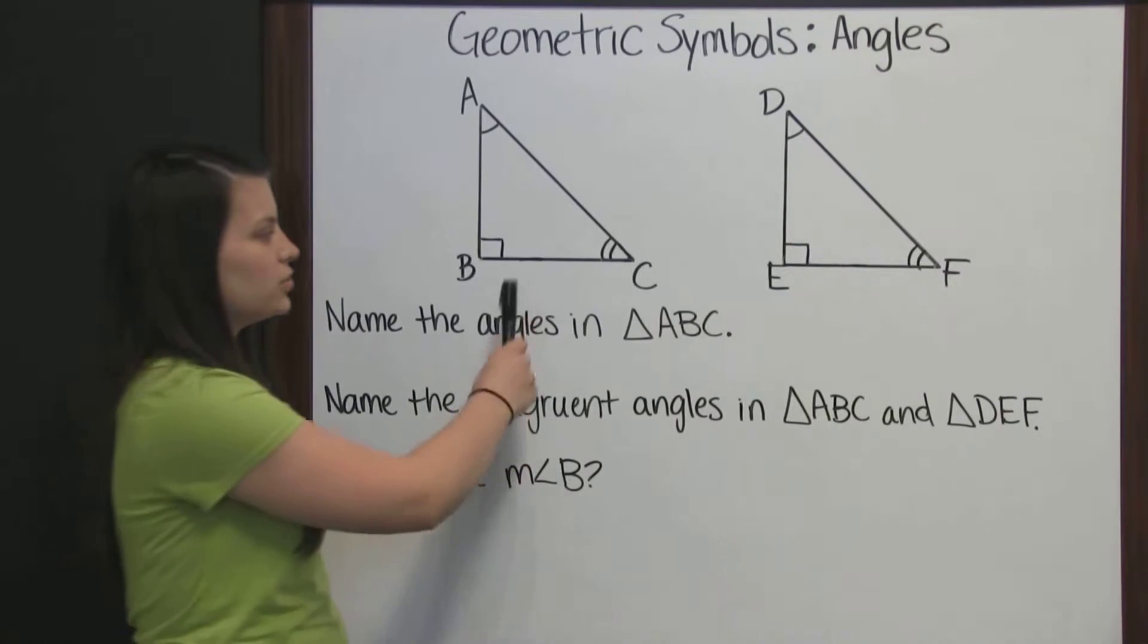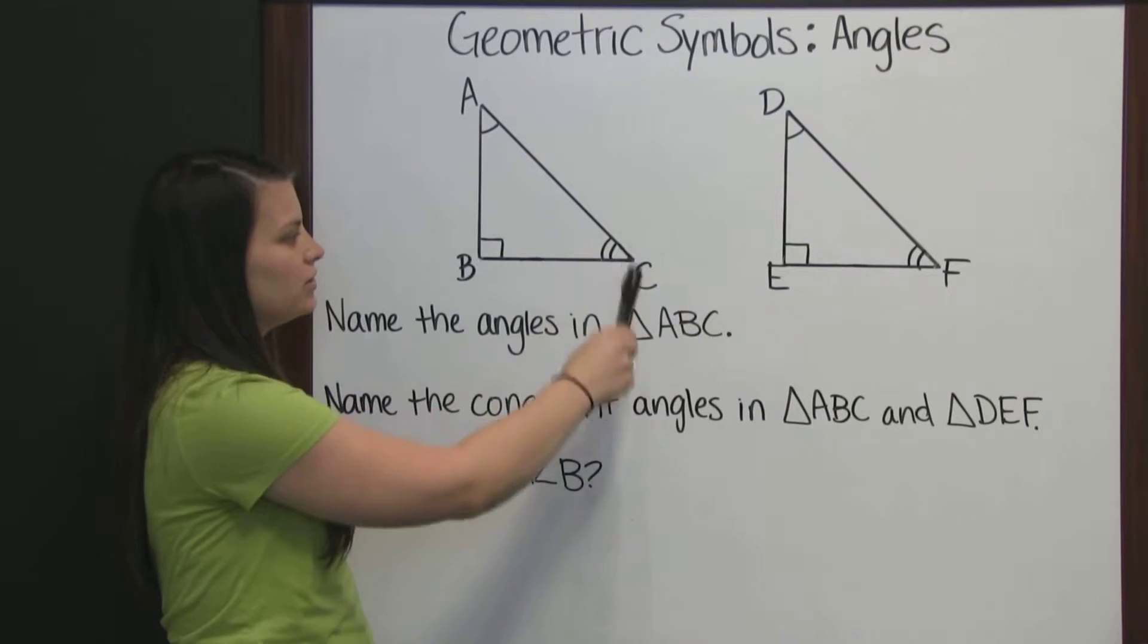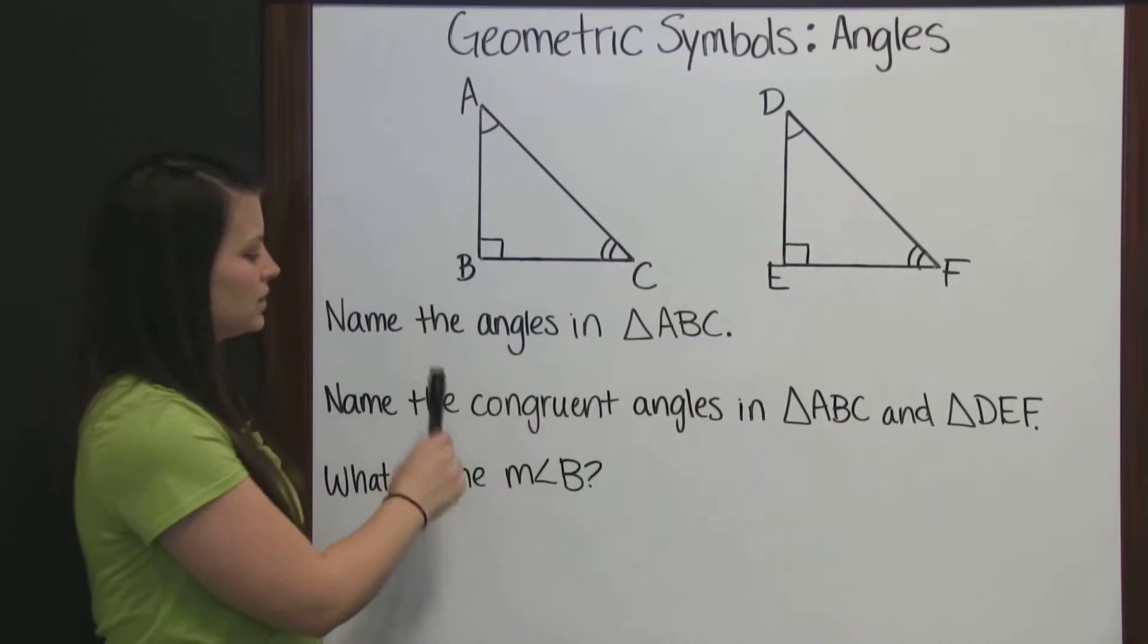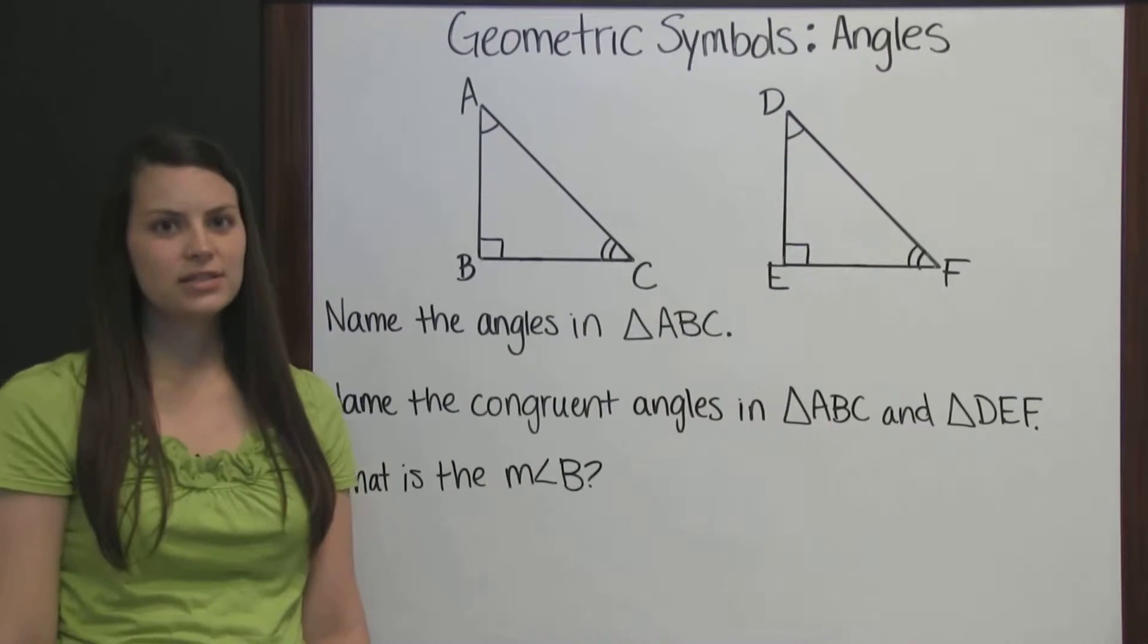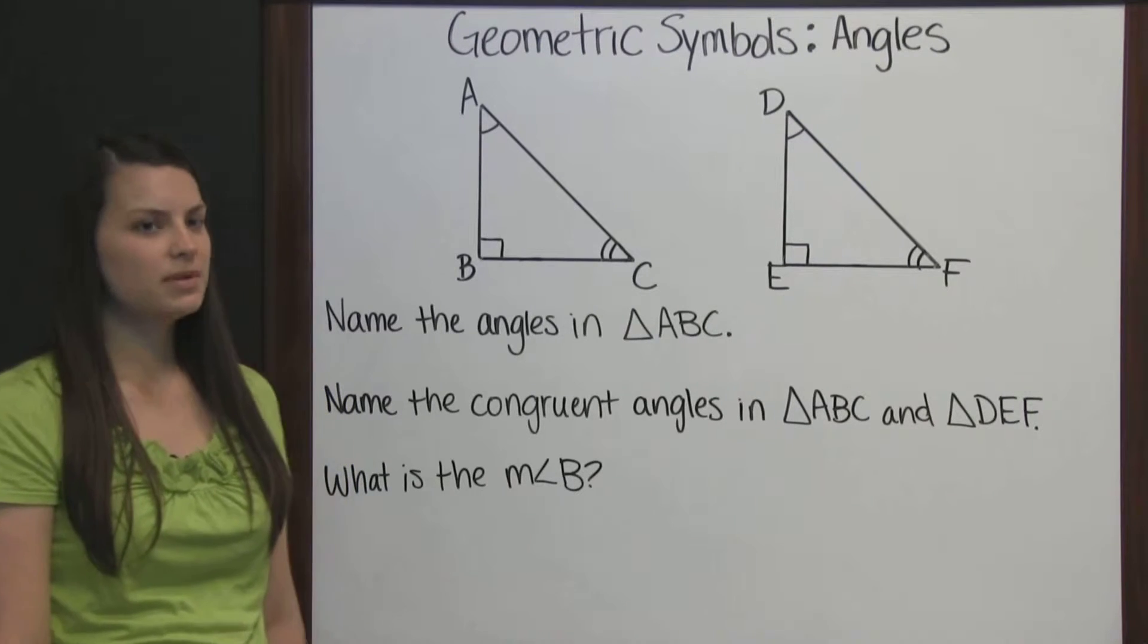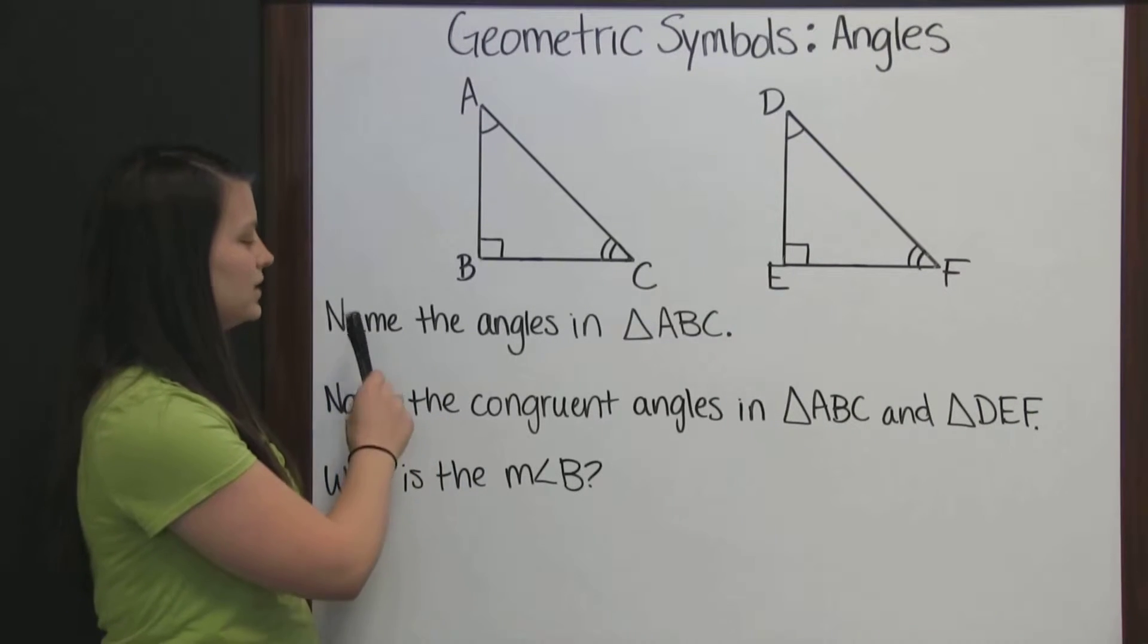Here we have two triangles, triangle ABC and triangle DEF. We're going to answer the following three questions and talk about what the symbols mean as we go.